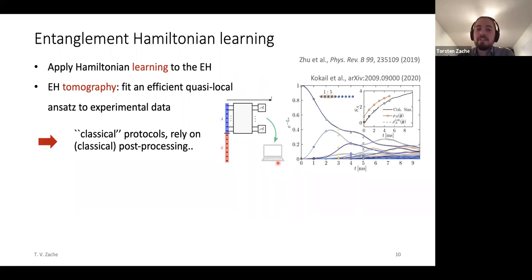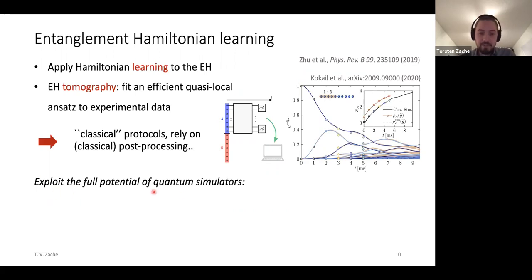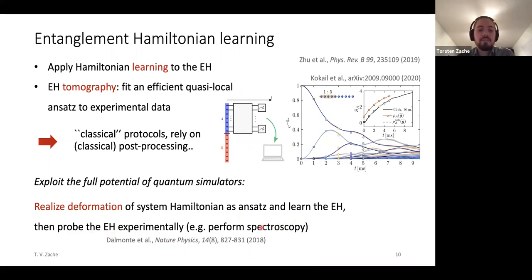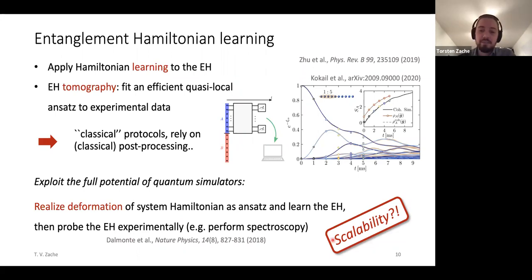However, these ideas are classical post-processing in a sense — you do simulation experiments, then put all your observations into a computer and do classical calculations. This is bound to fail at some point as systems get too large; for instance, to calculate the entanglement spectrum you still need to diagonalize the entanglement Hamiltonian on a subsystem, which is not feasible for large subsystems. What we've been working on is to develop protocols that exploit the full potential of quantum simulators by making use of the possibility to realize these entanglement Hamiltonians. Given that the entanglement Hamiltonian is often just a deformation of the system Hamiltonian, you can figure out the right coefficients for this deformation, learn how to realize it in a quantum simulation experiment, and then perform spectroscopy on this entanglement Hamiltonian to learn the entanglement spectrum — making the whole thing scalable and applicable to large systems.